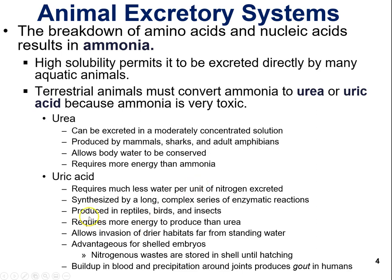Uric acid requires much less water per unit nitrogen excreted, so you don't have to excrete as much water. However, going from ammonia to uric acid involves a complex series of enzymatic reactions, requiring more energy to produce uric acid than urea. Uric acid is produced in reptiles, birds, and insects — animals that live in drier habitats because they can secrete uric acid without as much water.